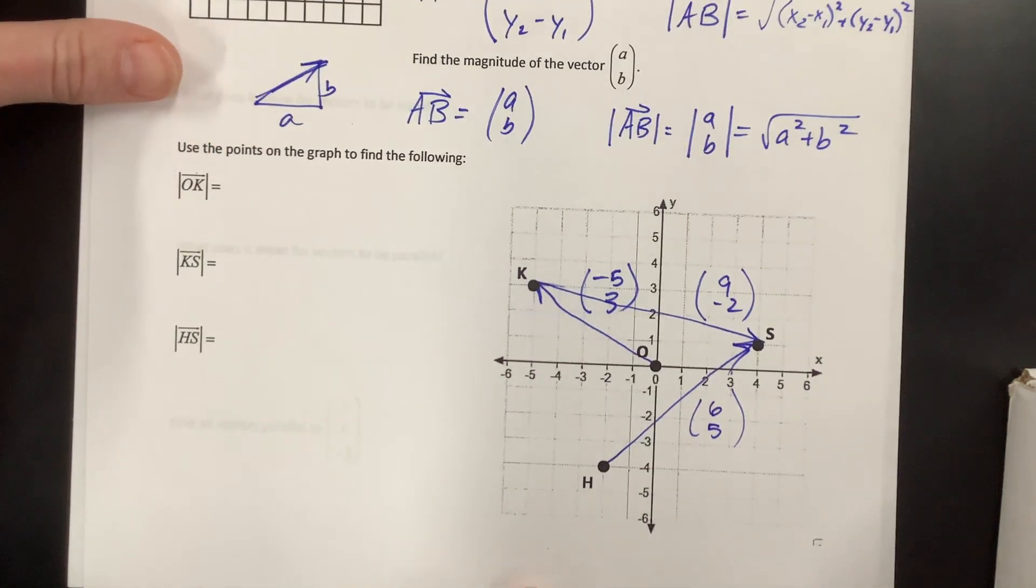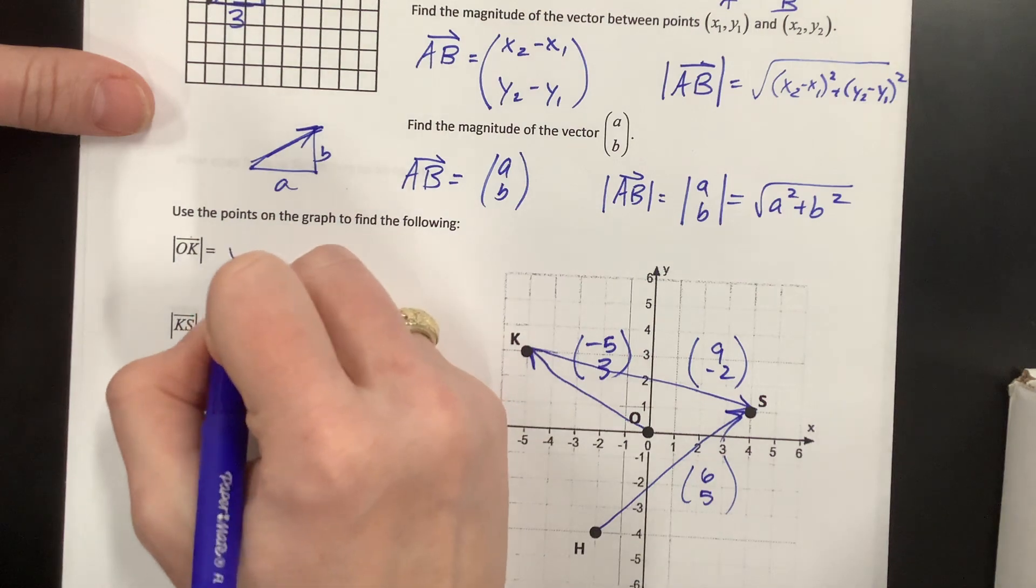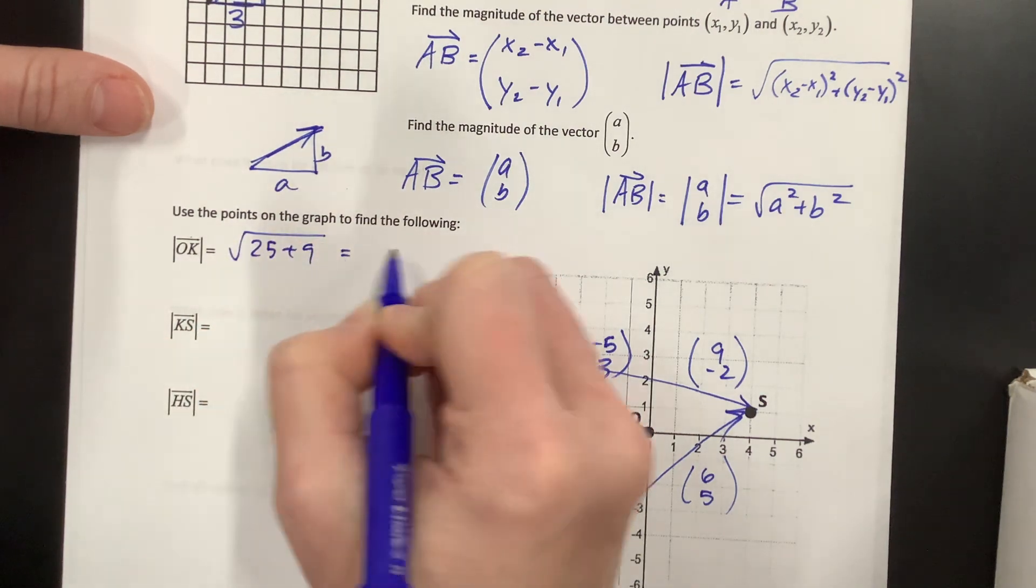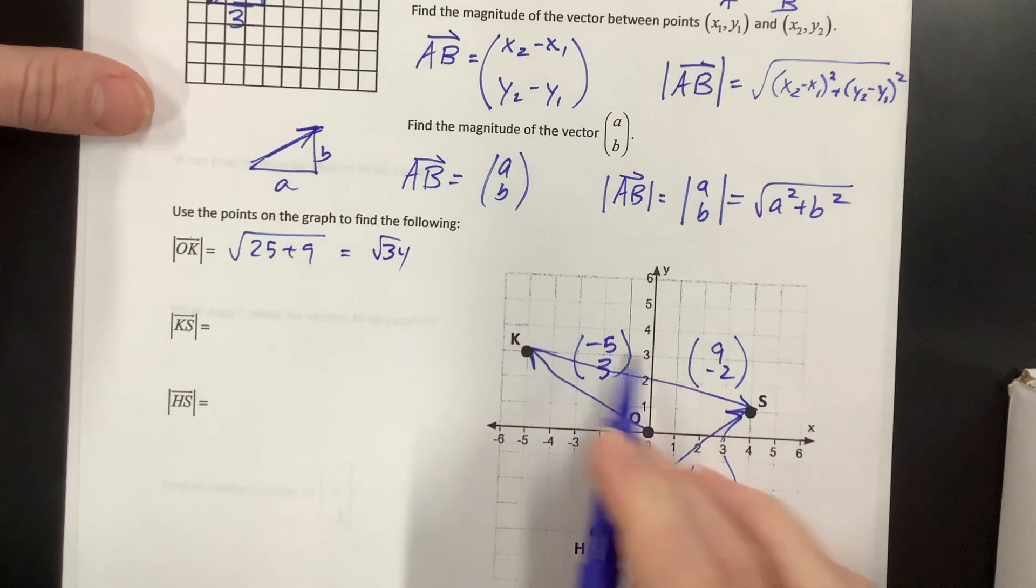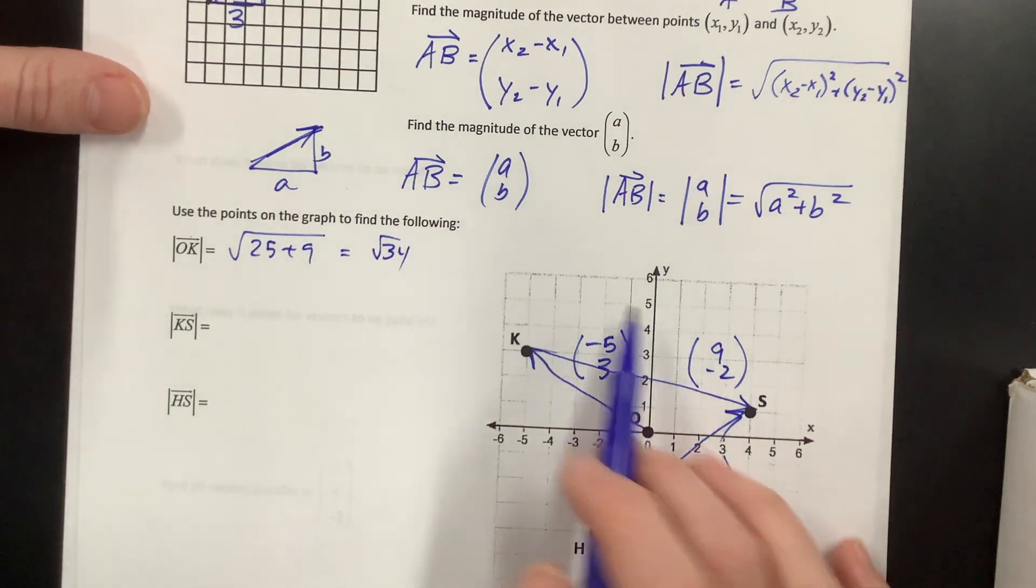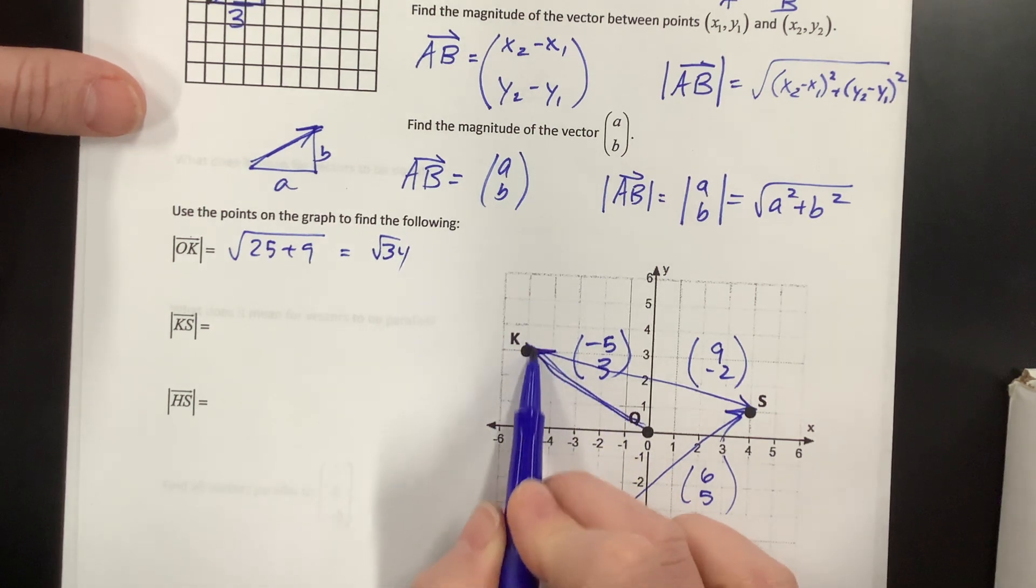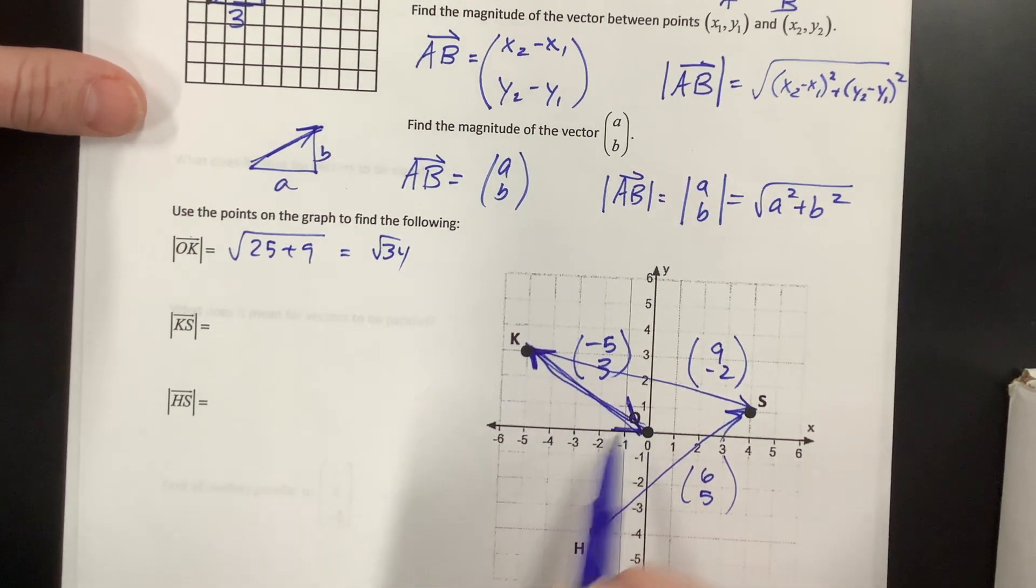Okay, so if I want to find the magnitude of those different things, magnitude of OK is going to be the square root of 25 plus 9, or the square root of 34. Notice, negative 5 and I squared becomes positive 25, positive 5 and I squared becomes positive 25. This vector has the same magnitude as that vector, right?